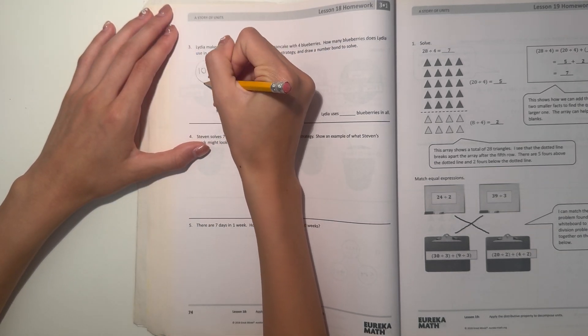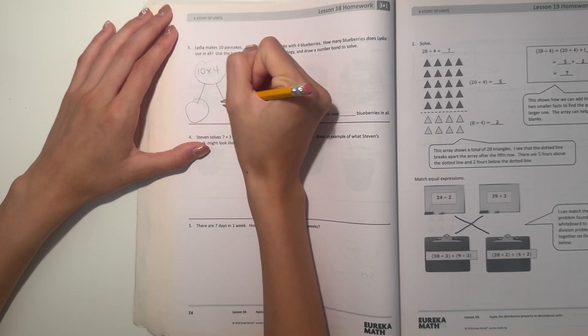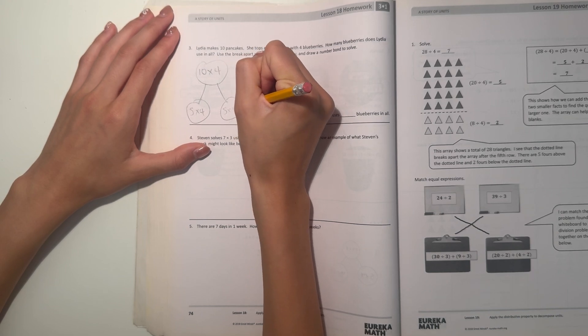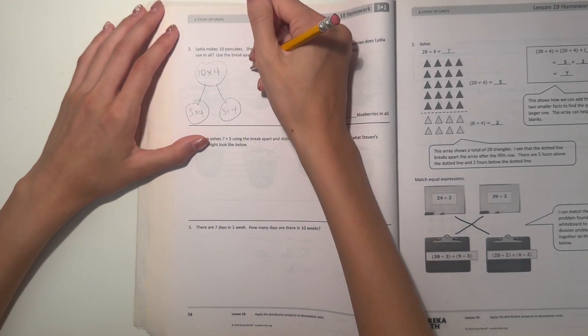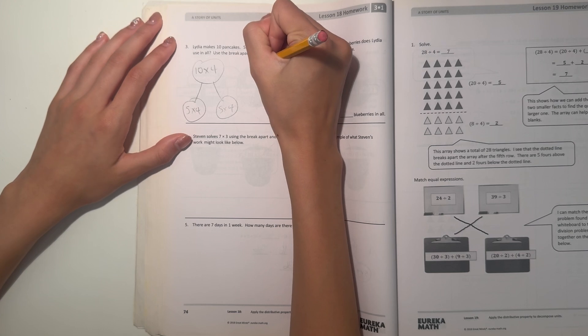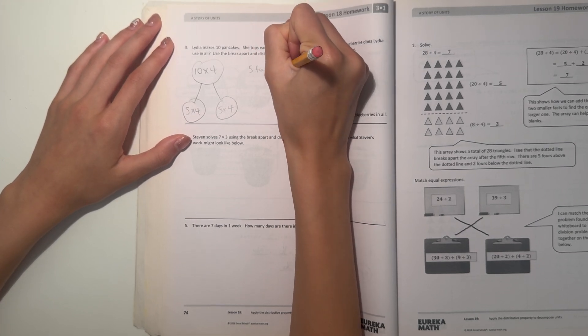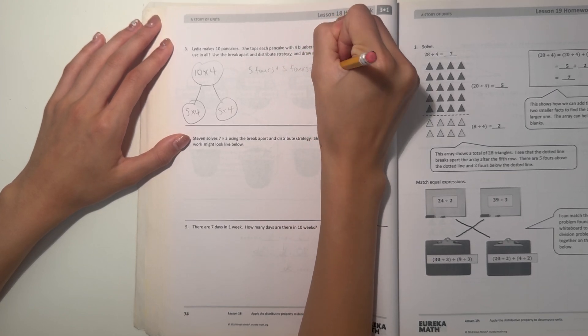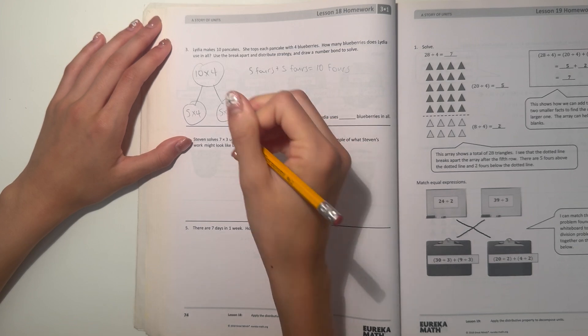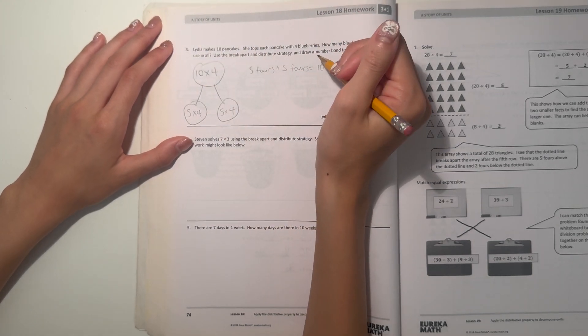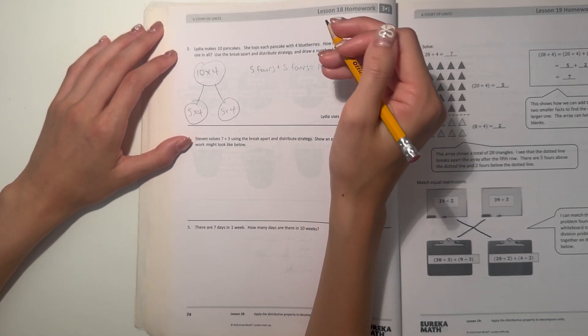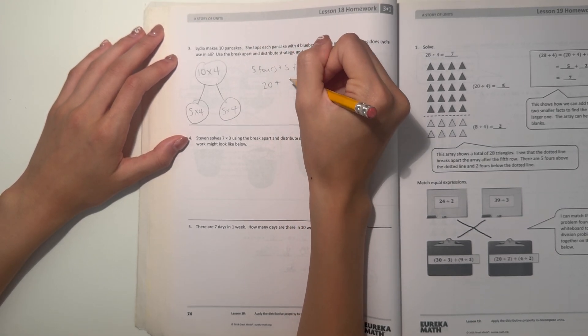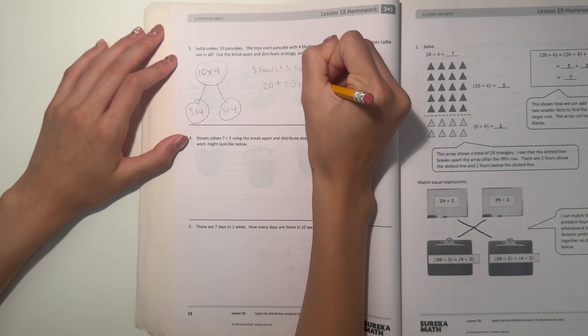You can do 10 times four. You can break it apart into like five times four and five times four, since five plus five is ten. So we can do five fours. So now, five fours plus five fours equals ten fours. So five times four is 20 plus 20 equals 40.